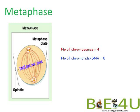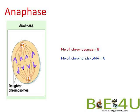Now let us look at mitotic anaphase. Here chromosomes start moving toward the poles — sister chromatids are separated and spindle fibers pull them toward the poles. The number of chromosomes is 8; count the number of functional centromeres. The number of chromatids is also 8, as each chromosome now has a single chromatid.